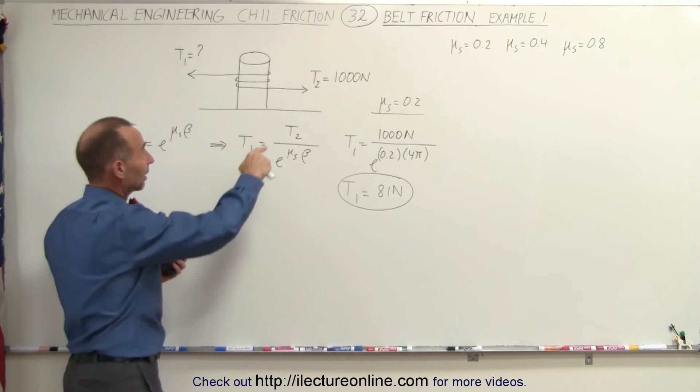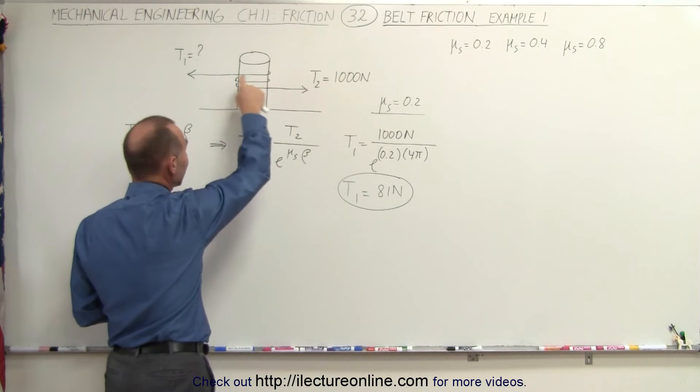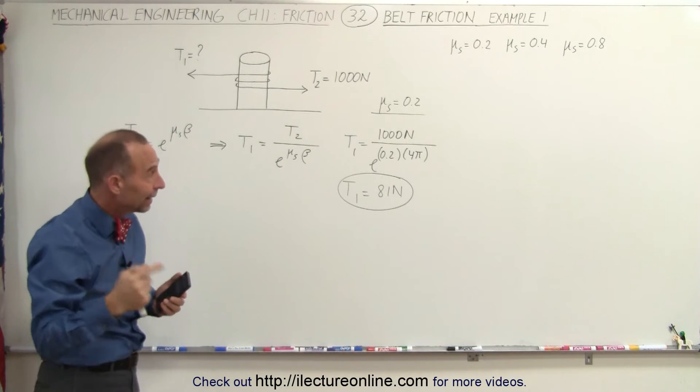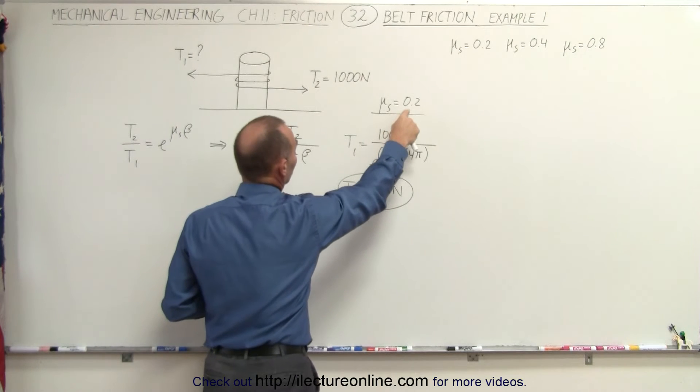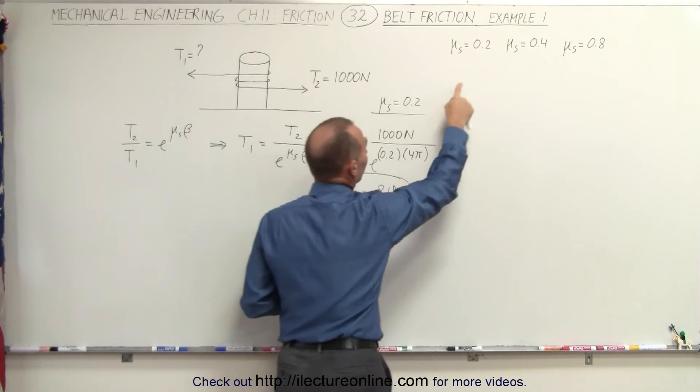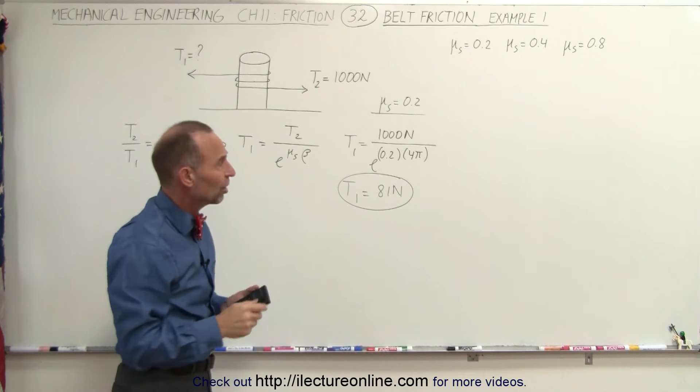You see here that when you apply a force of a thousand newtons here you only need 81 newtons to keep that rope from slipping. And that is if the coefficient of friction is 0.2. What happens if the coefficient of friction is 0.4? How does that change things?